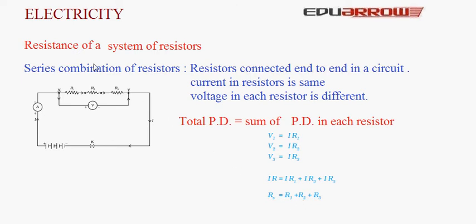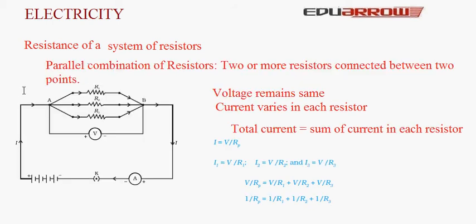Now let us discuss the resistance of a system of resistors in parallel combination. When two or more resistors are connected between two points, the combination is known as a parallel combination. In a parallel combination, voltage remains the same. In the figure, the voltage across resistors R1, R2, and R3 remains the same, but the current varies in each resistor.